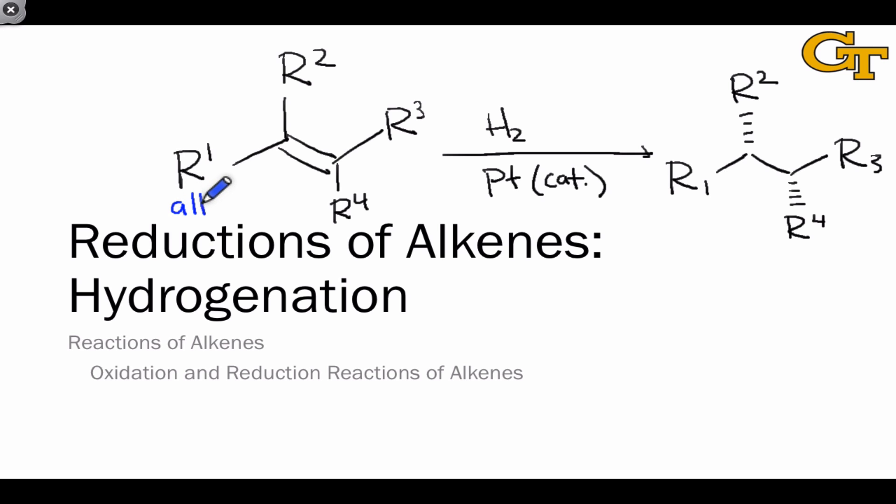Reductions of alkenes involve the conversion of an alkene starting material into an alkane product through the incorporation of two hydrogens into the substrate.